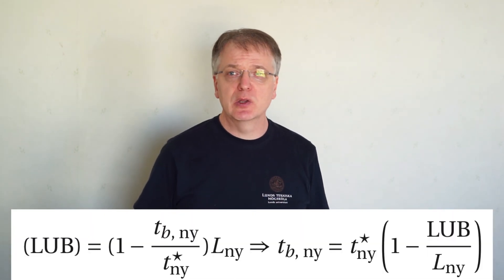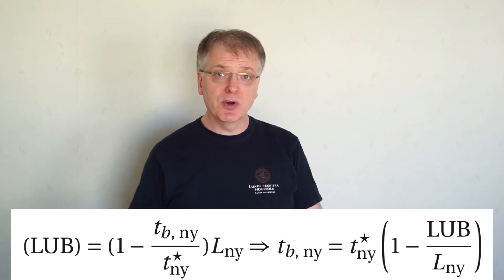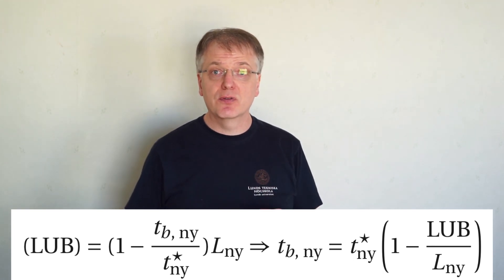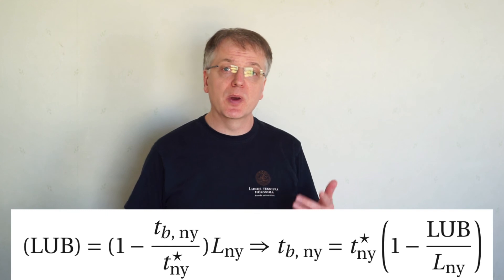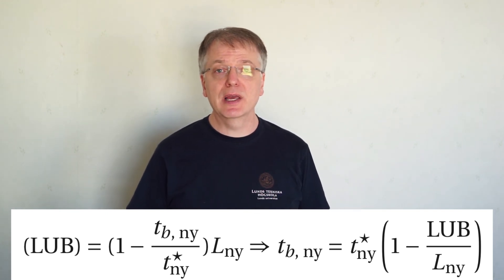We can calculate the breakpoint for our large column using LUB for our small column in the following way. Our new breakpoint equals T star for the new column multiplied with 1 minus LUB divided by our new column length.